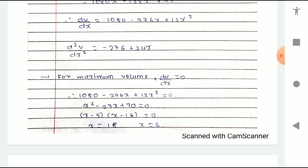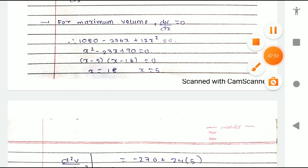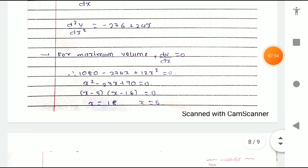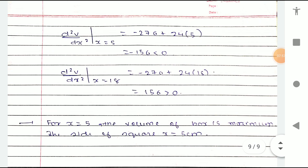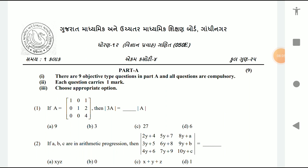d²V/dx² = −276 + 24x. For maximum volume, set dV/dx = 0: 1080 − 276x + 12x² = 0. The solution is shown on screen — you can write it down. That is the final solution for Section C. If you like this video, please subscribe to my channel, like, and share this video with your friends.